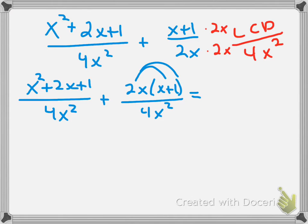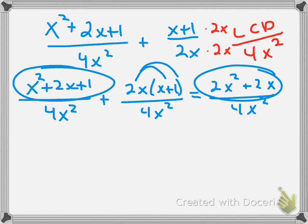I'll go ahead and distribute my 2x, and that will leave me with 2x squared plus 2x over 4x squared. So, now I'm going to combine these two. I'm going to combine this numerator and this numerator. Combine them in common terms. So, that will give me 3x squared plus 4x plus 1 over 4x squared.